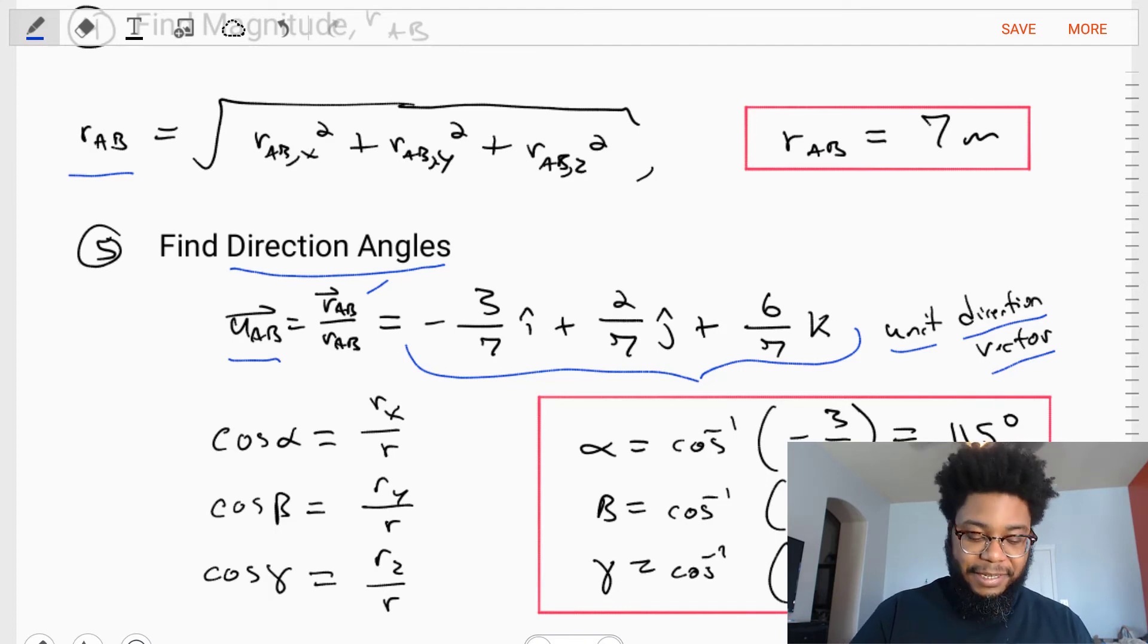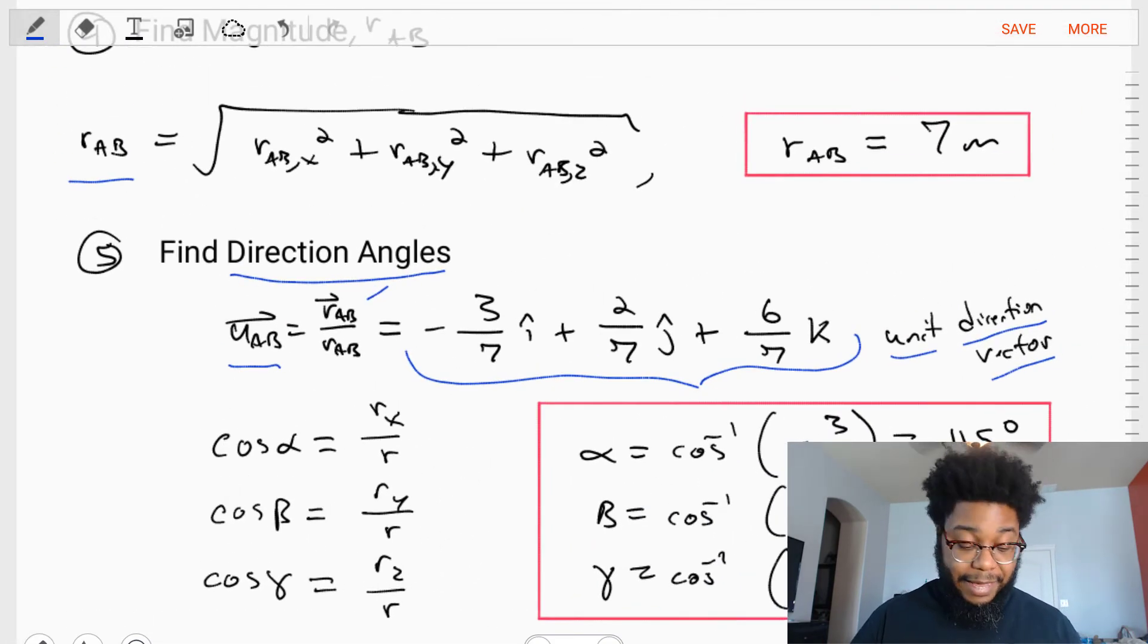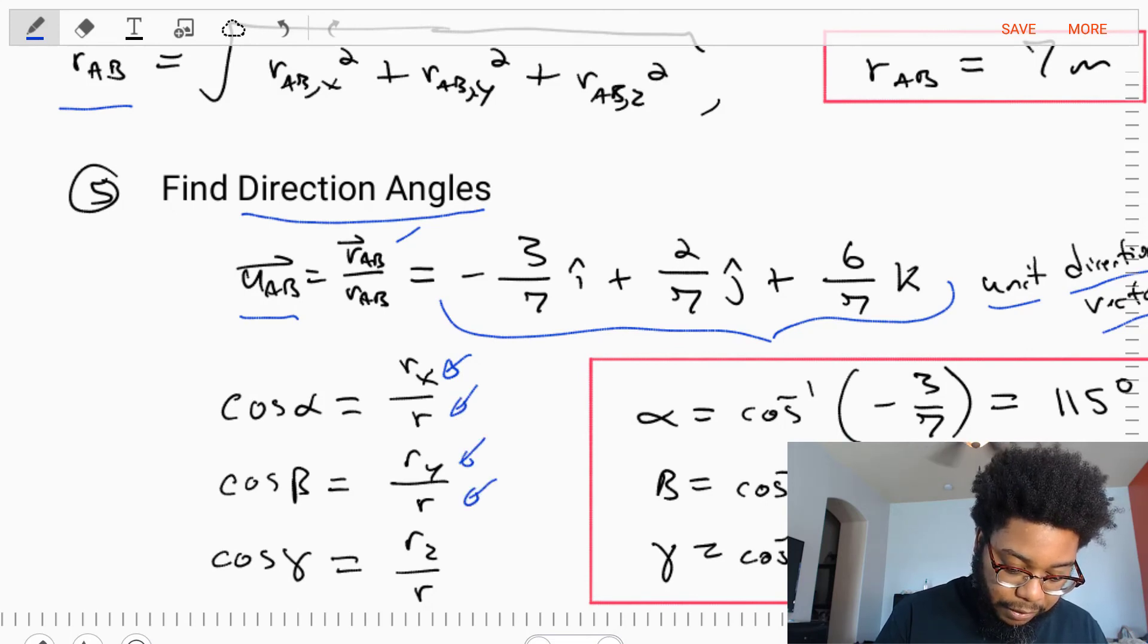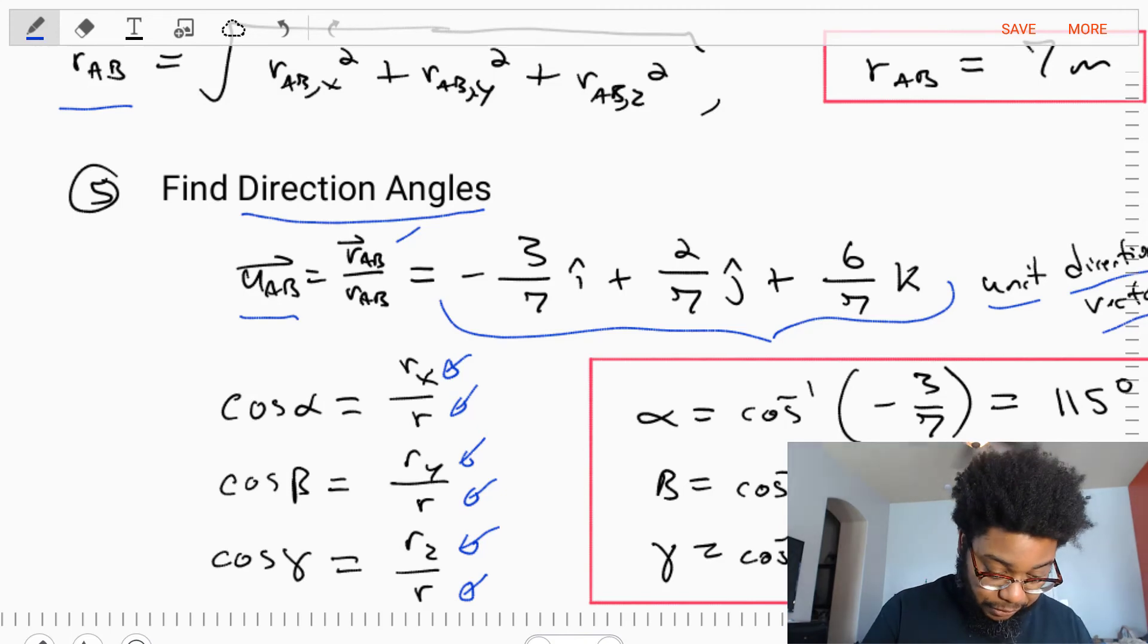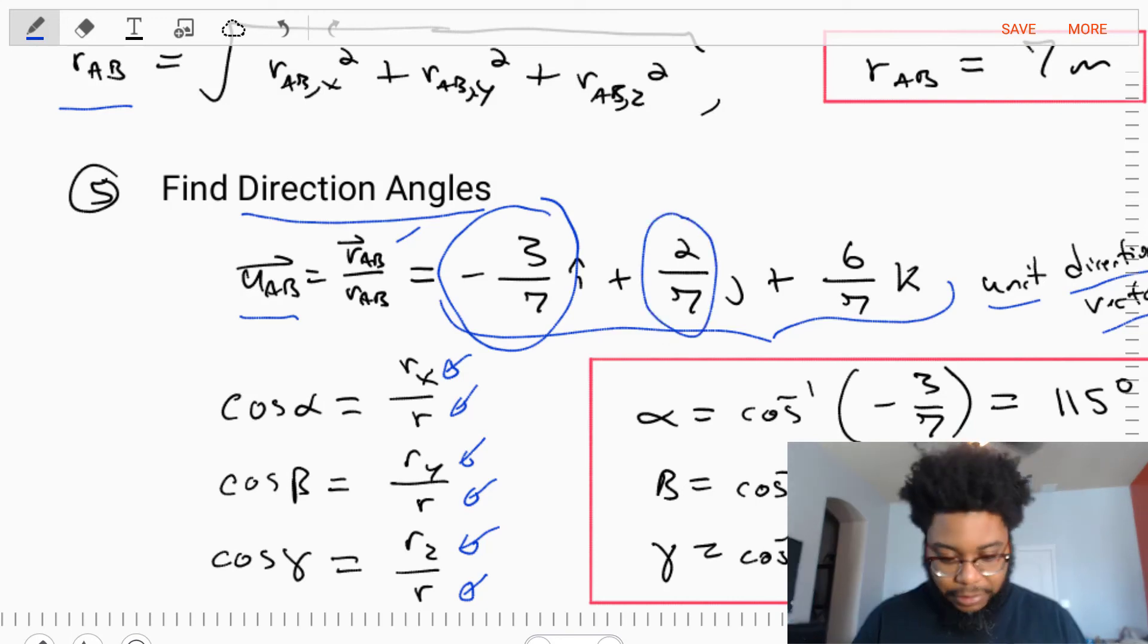But often, it's easier for us to present our directions as angles. In this example, we're going to present the cosine angles. These angles, alpha, beta, and gamma, can be found as the ratios of each of the components: the Rx component over R, Ry component over R, Rz component over R. The ratios of the components with respect to the lengths. These ratios for cosine alpha, beta, and gamma are what we just found in our unit direction vector: negative three-sevenths, two-sevenths, and six-sevenths.